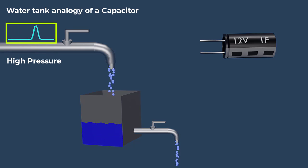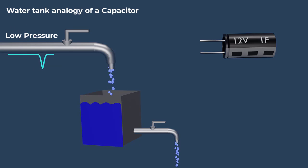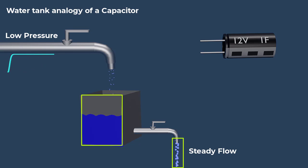During periods of high pressure, the excess water will be stored in the tank. During periods of low pressure, the stored water in the tank will continue to flow out and maintain a steady flow of water.